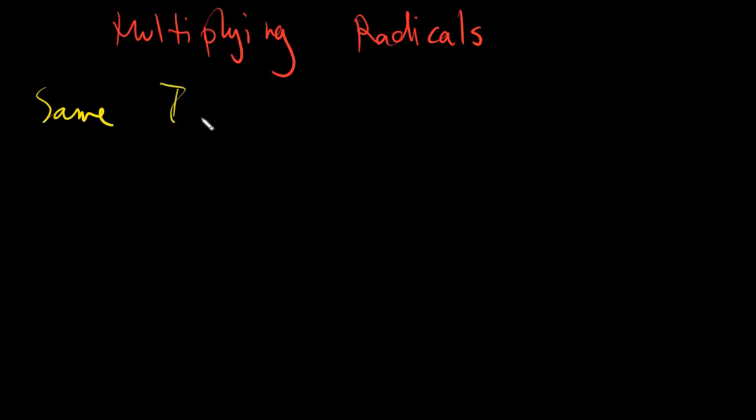So first case, same index or indices. When we say same indices, they would be radicals having the same indexing number. And usually we will just simply be multiplying squares and cubes. So this is one example. And another example would be cube root of 2 times cube root of 4. Same index.